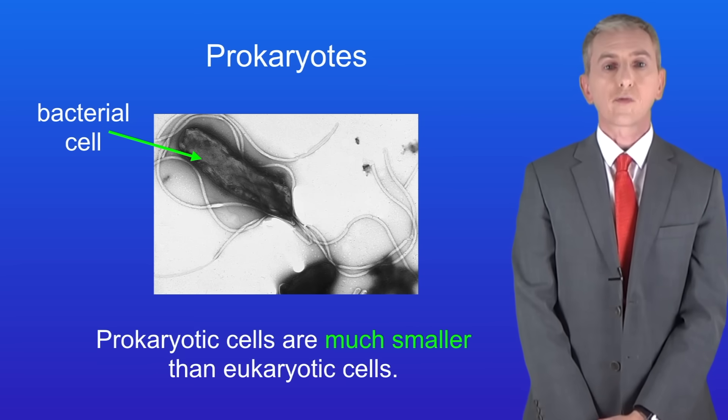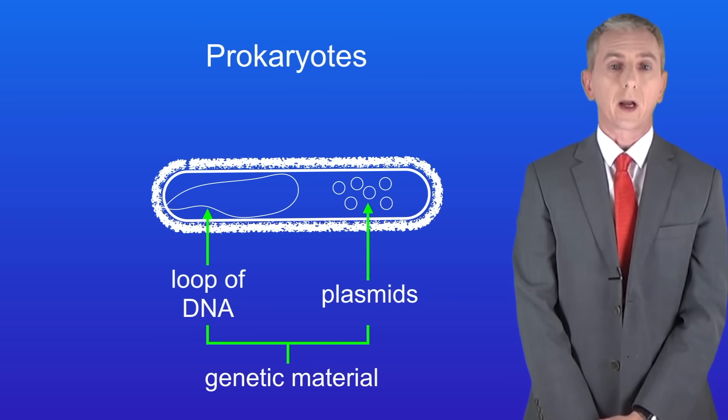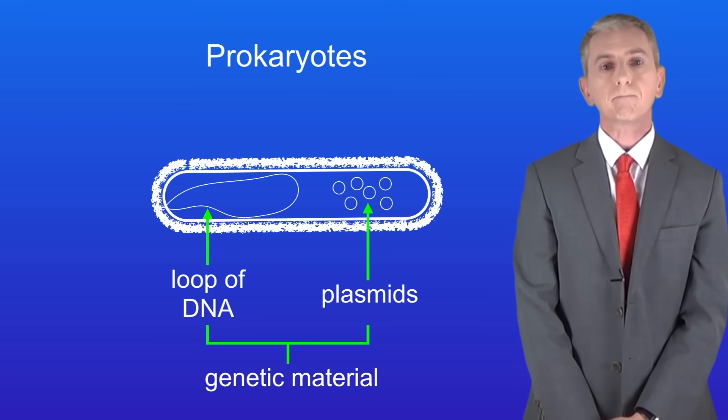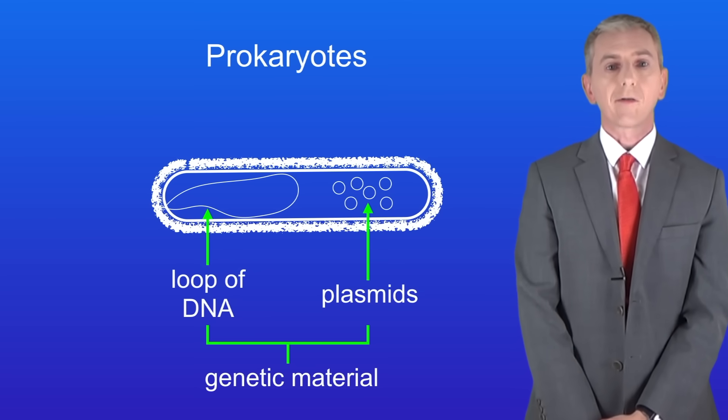The second key fact is that prokaryotic cells are much smaller than eukaryotic cells. I'm showing you here a drawing of a bacterial cell. As I said before, prokaryotic cells such as bacteria do not have a nucleus.